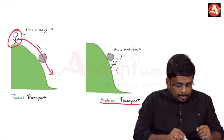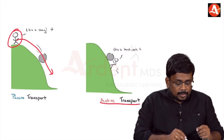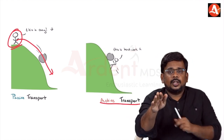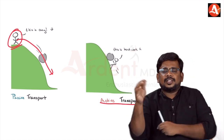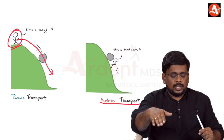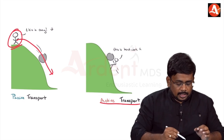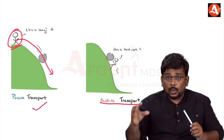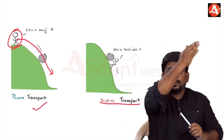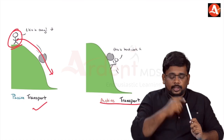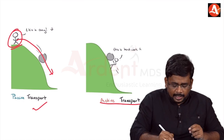Here is a cartoon picture to explain: a man coming from a higher area to a lower area does not need energy — that is passive transport. Active transport is movement from low to high, called uphill movement, and it needs energy in the form of ATP.